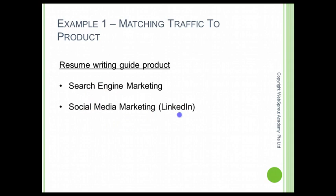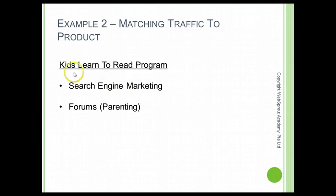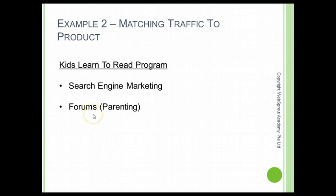Example two is a program that teaches kids how to read as early as two years old — they can read a storybook. For this product, search engine marketing is again one of the best channels. The second option is forum marketing, where you identify forums discussing parenting and advertise this product using your affiliate link in their marketplace section.